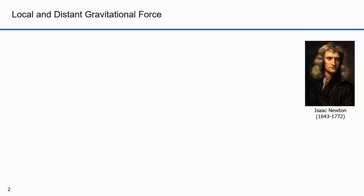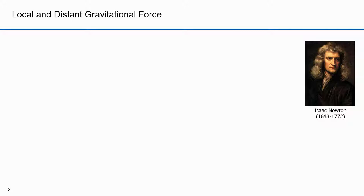The year was 1665, the month was August, and England was besieged by bubonic plague. Isaac Newton, then a 23-year-old Cambridge University student, retired to the solitude of his family's farm in Lincolnshire until the plague subsided and the university reopened. Not given to inactivity, Newton composed 22 questions for himself ranging from geometric constructions to Galileo's new mechanics to Kepler's planetary laws.